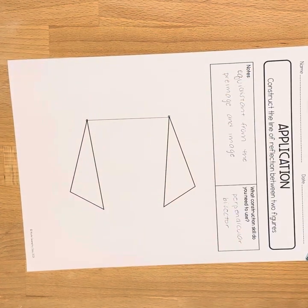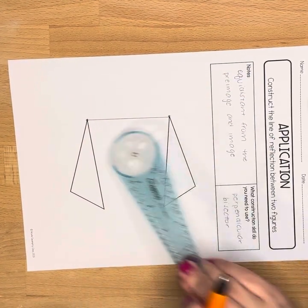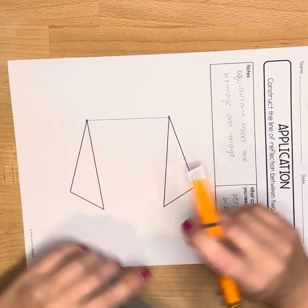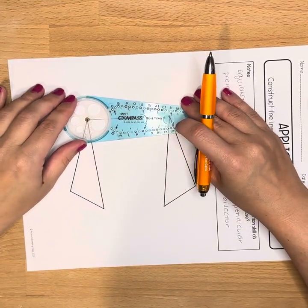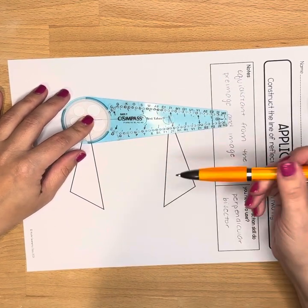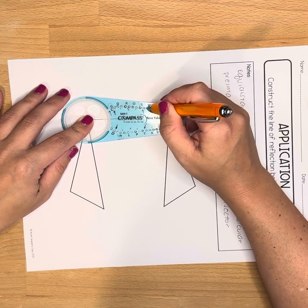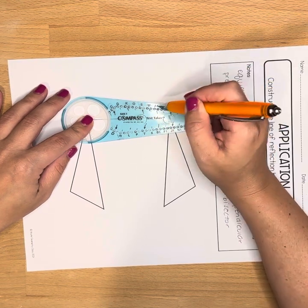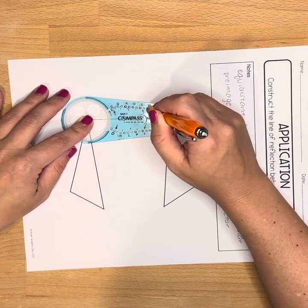And then basically what we are going to do is our perpendicular bisector construction but now of this line segment. So I'm going to put the gold ring of my compass, my starting point on one end point, and I'm going to find a letter or marking on my compass that is close to the other. So I'm going to pick this one at W.